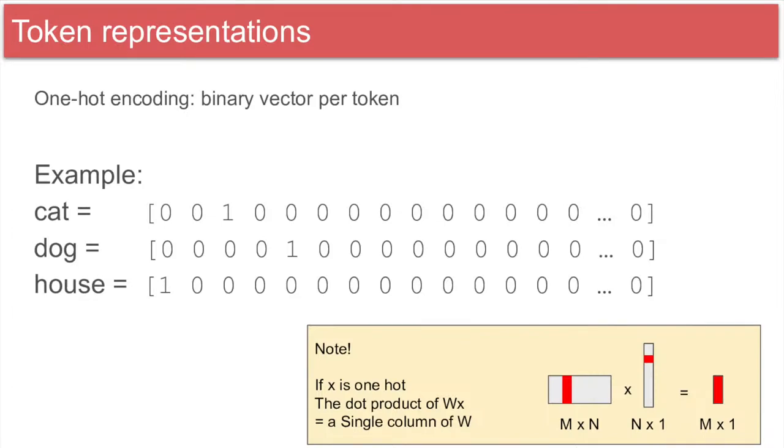Also, if we have more than one one in a vector, we'll call this a multi-hot vector, and they can come in handy as well.